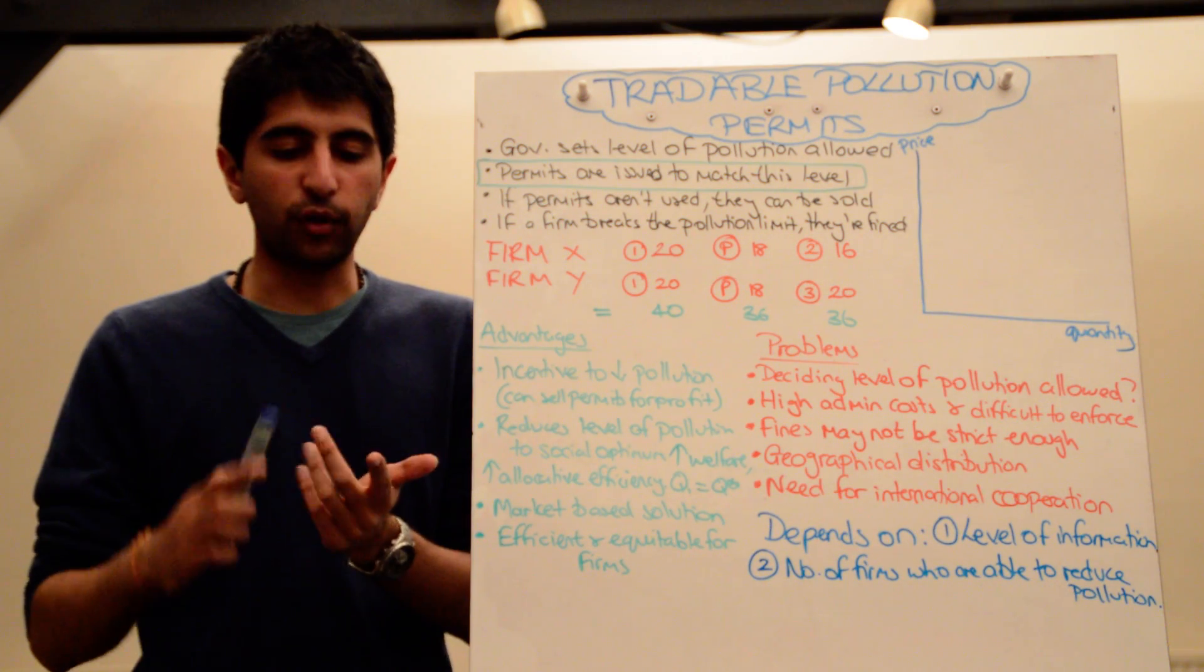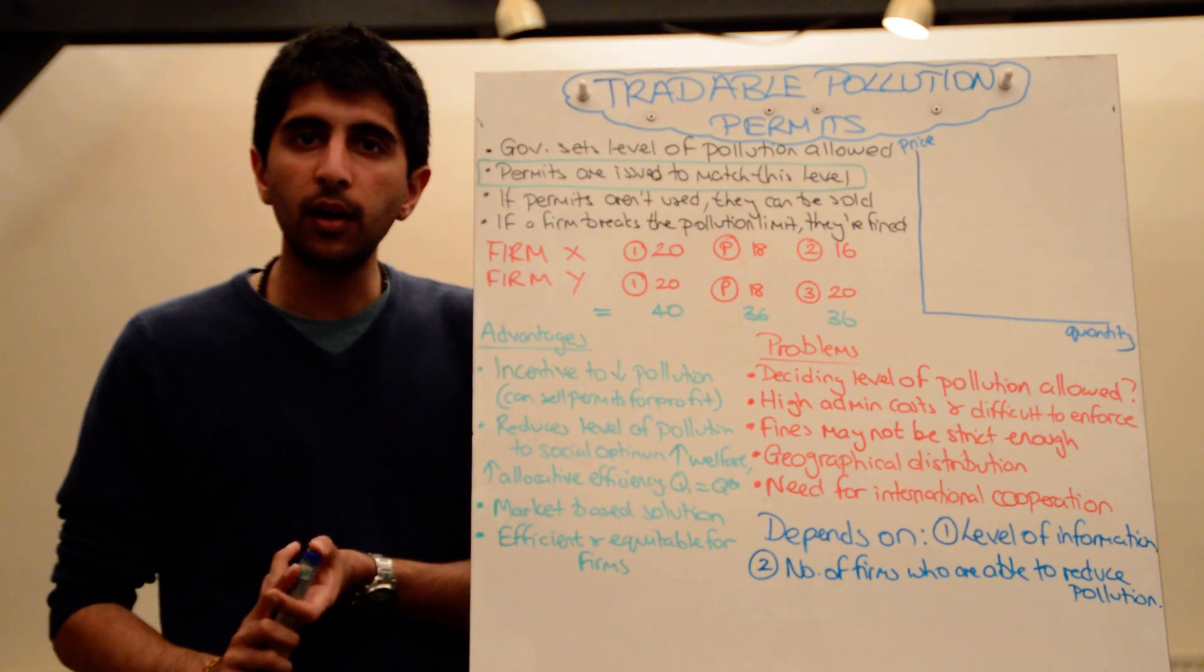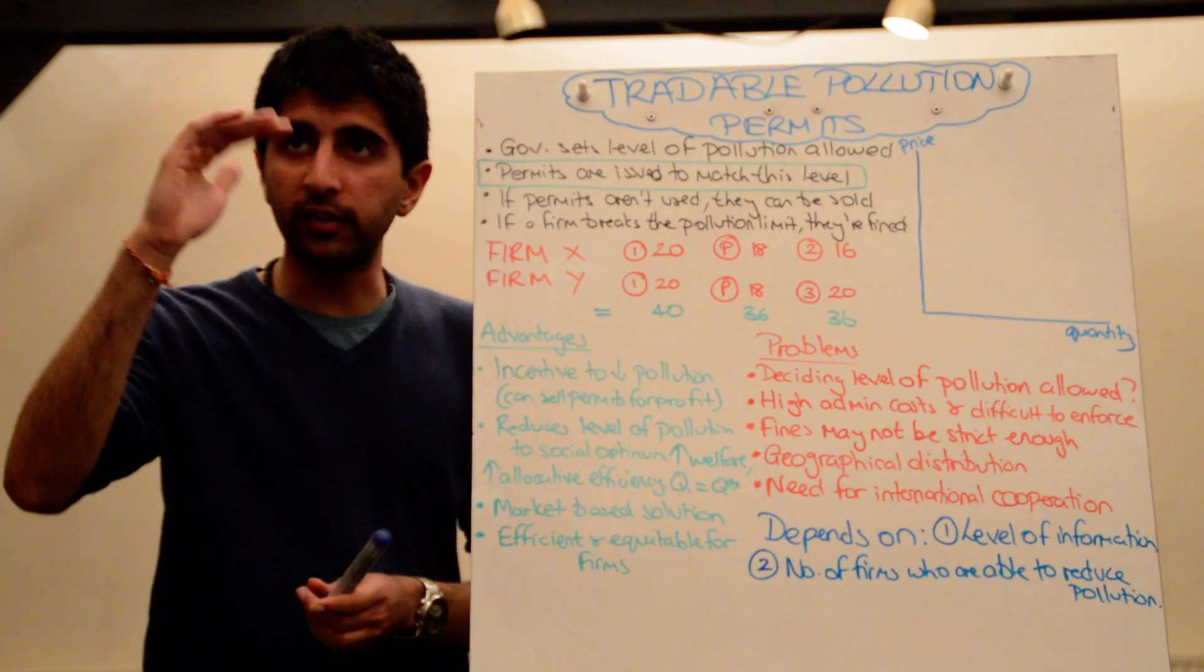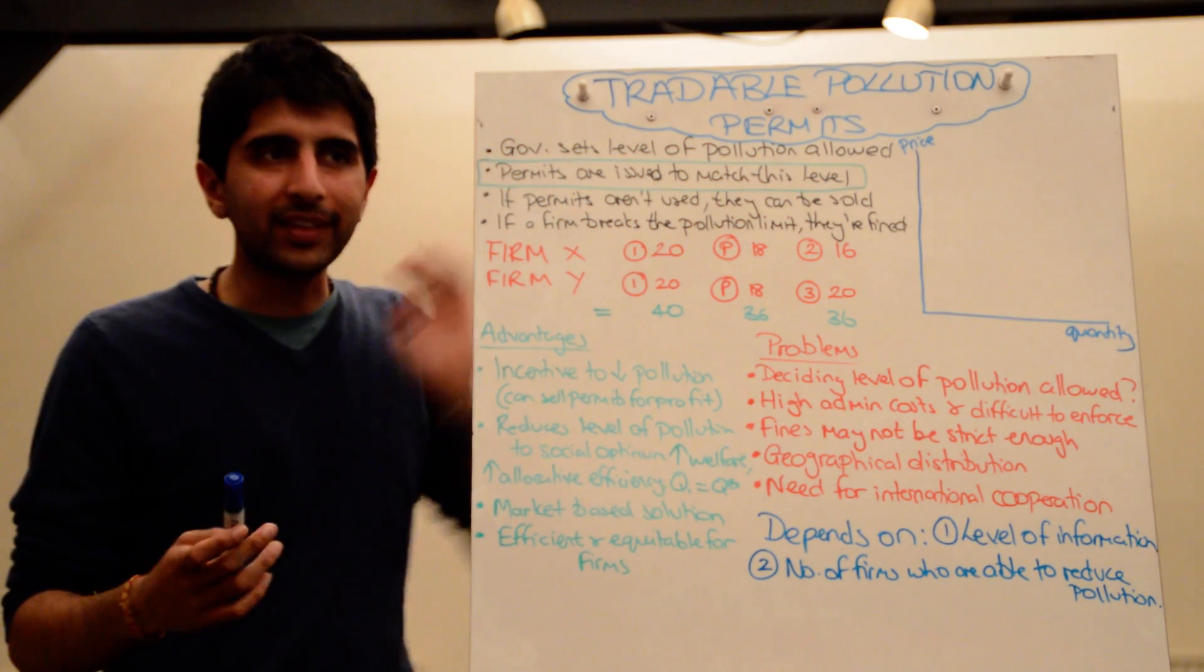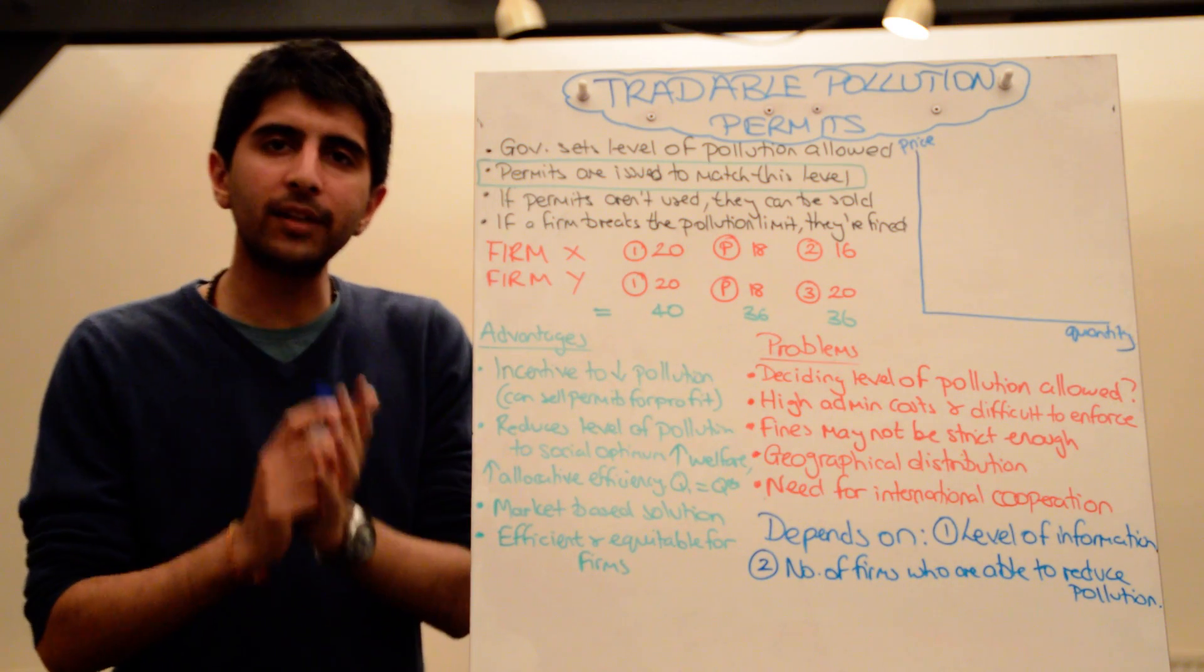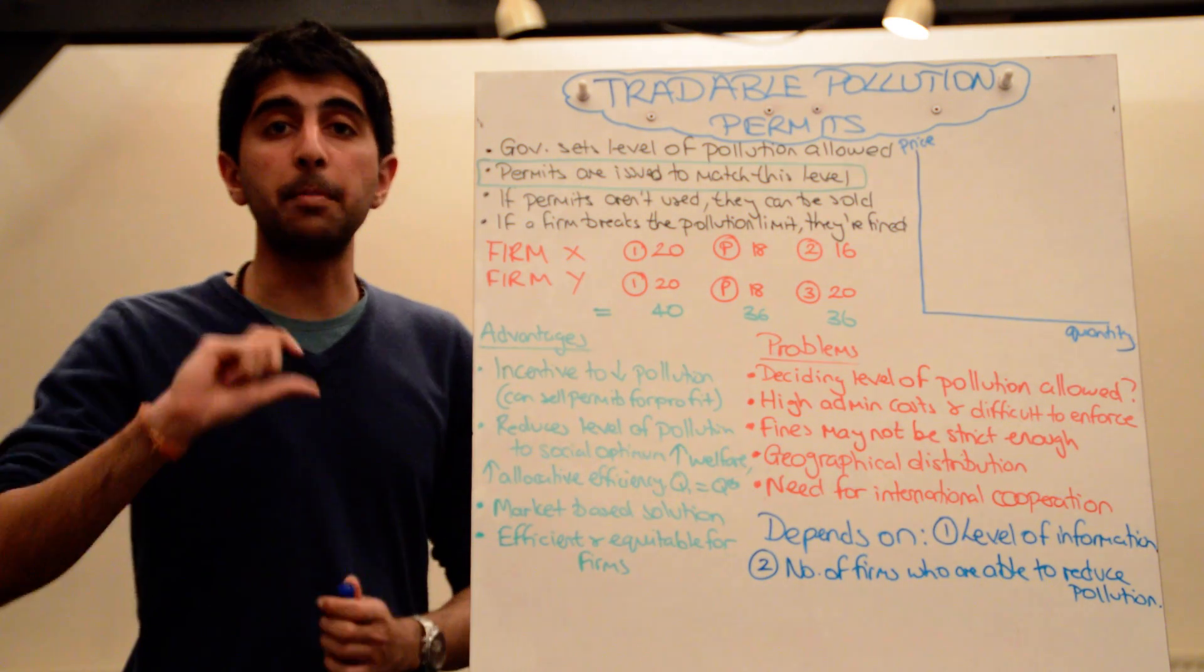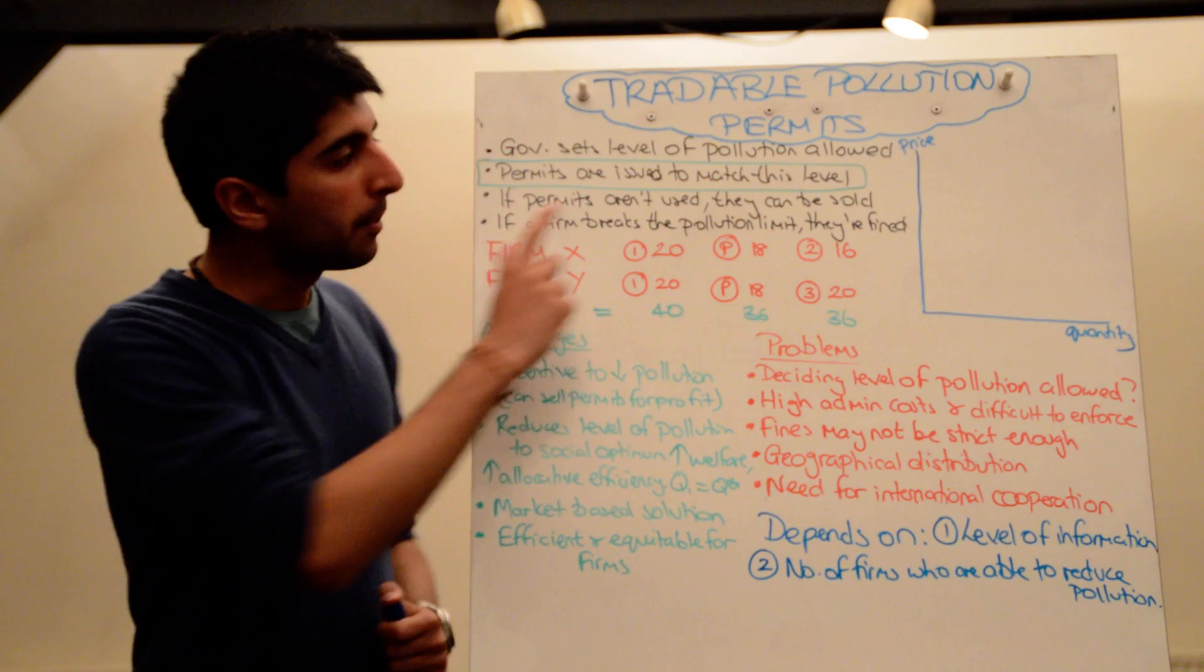So that might involve investing in green technology or finding ways to reduce the level of pollution. But they can also decide that, hang on a minute, maybe reducing pollution isn't the most efficient thing for me. I'm going to buy permits.